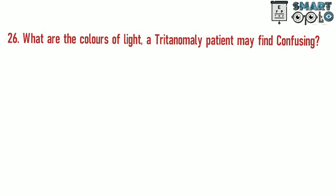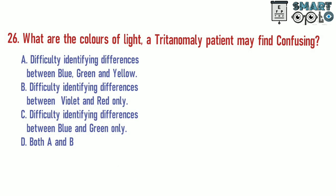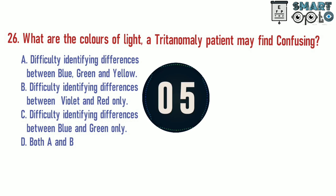Question 26. What are the colors of light a tritanomaly patient may find confusing? A. Difficulty identifying differences between blue, green, and yellow. B. Difficulty identifying differences between violet and red only. C. Difficulty identifying differences between blue and green only. D. Both A and B.